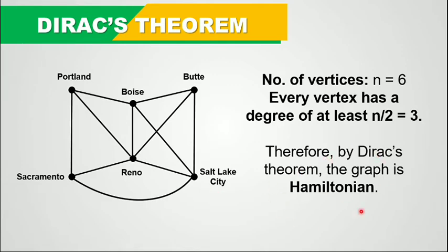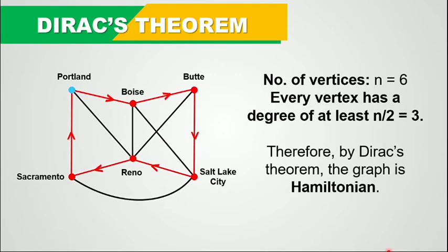For example, if we start at vertex Portland, then we go to Boise, to Butte, to Salt Lake City, to Reno, to Sacramento, and then back to Portland. So this is a Hamiltonian circuit.